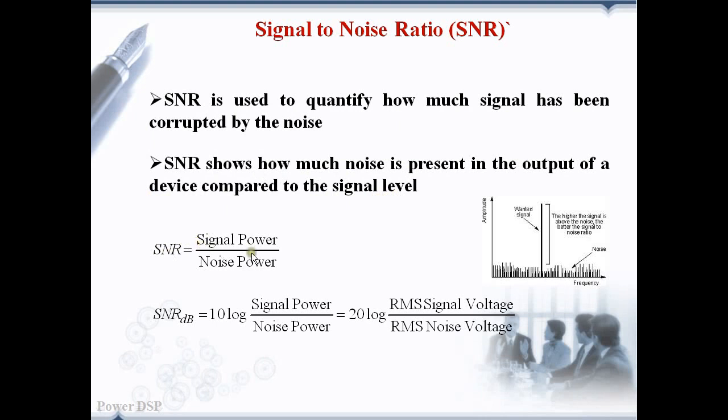SNR is defined as the ratio of signal power to the noise power that is corrupting the signal. Normally it is defined in logarithmic scale in decibels. SNR in dB is given by the equation 10 log of signal power divided by noise power.